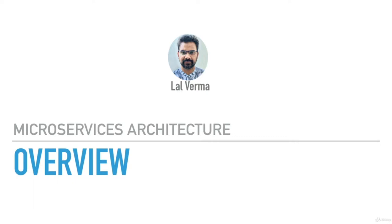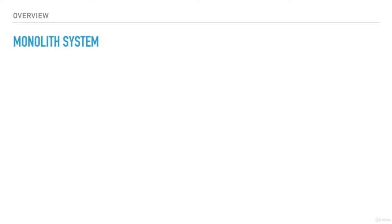In this very first section, we are going to discuss the definition, characteristics, and benefits of the microservices architecture. We will also discuss the supporting technologies which played a crucial role in its evolution. Microservices architecture provides solutions to the problems of monolith systems, so it makes sense to start the discussion with this topic.